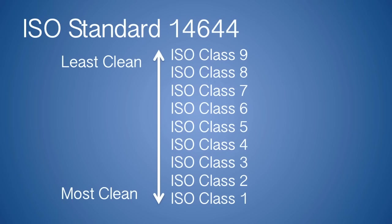Clean rooms are classified under the ISO standard 14644. The classifications are based upon the amount and size of airborne particles in a clean room at any given time. The ISO standard covers nine classes of clean rooms, with class 1 being the cleanest and class 9 being the least clean.